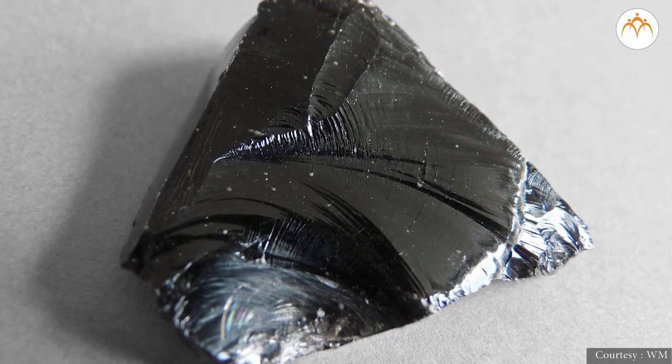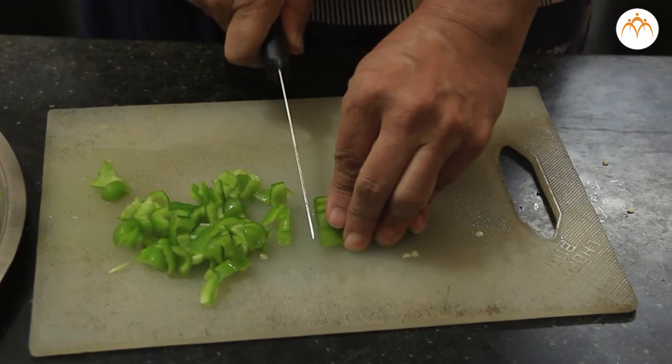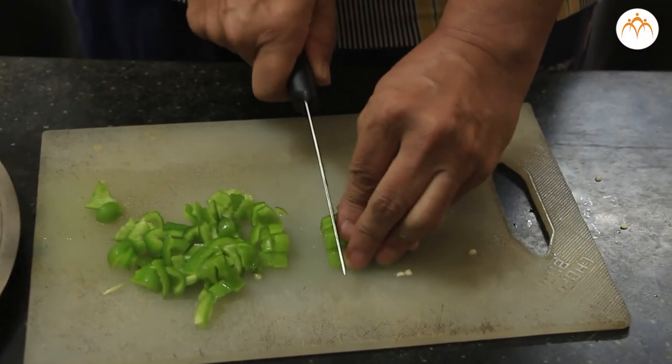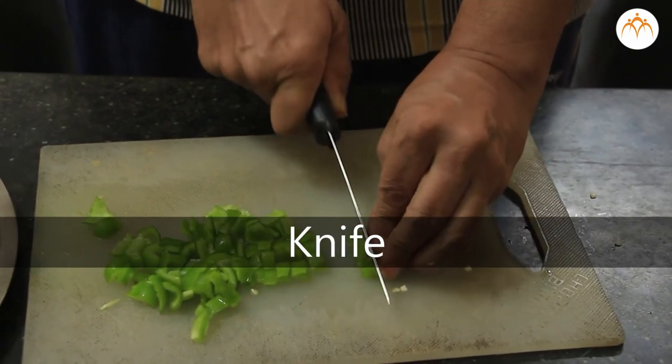Long ago, people used sharp rocks for cutting and chopping food. Today, we use knives which are modern machines with sharp edges. Knife is a simple machine. It is a kind of wedge.